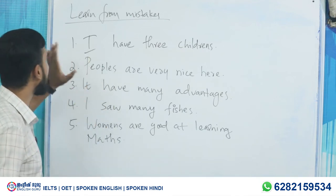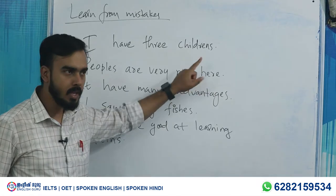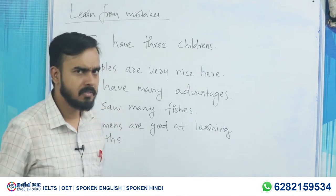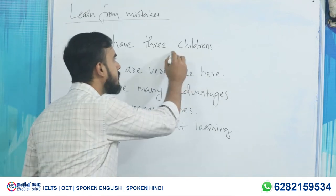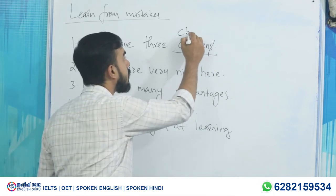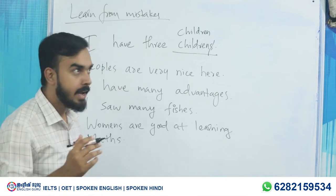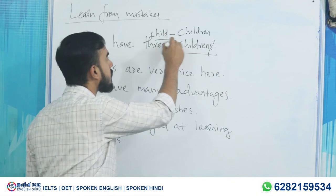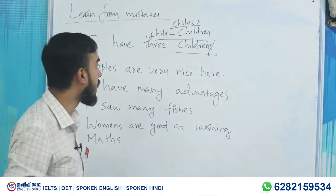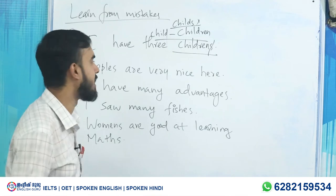The first sentence is: 'I have three children's.' It kind of sounds fine, right? But actually there is no word like 'children's.' It is simply 'children' — I have three children, I have four children. And the singular of 'children' is 'child.' Don't write 'child's' either. It is 'children.' So if we are making this mistake, now we will be careful.